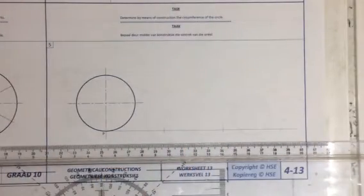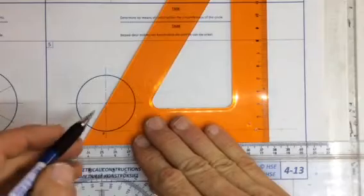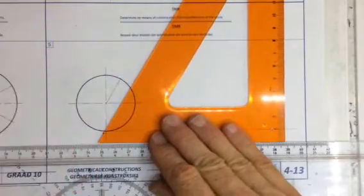Once I've done that, what I'm going to do is I'm going to take my 60 degree set square and I'm going to draw a line going from the center up to the circle over there.